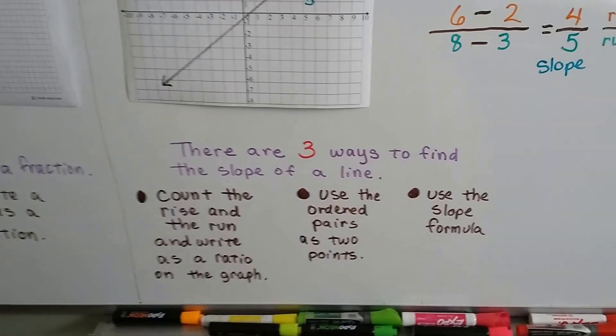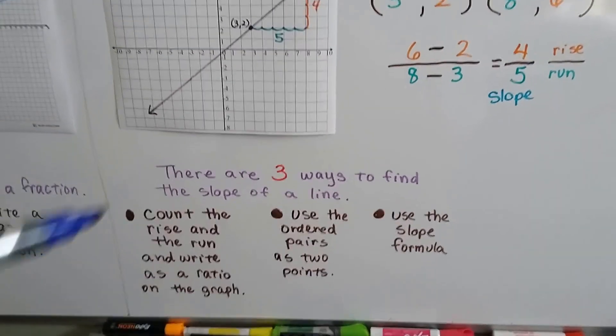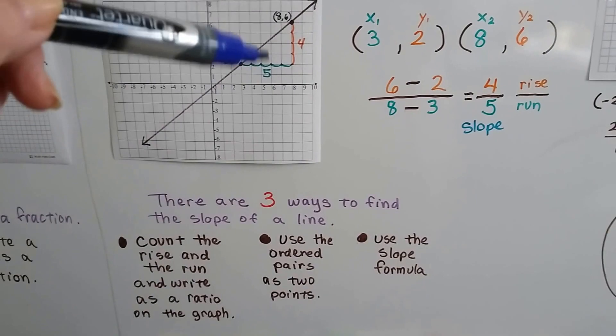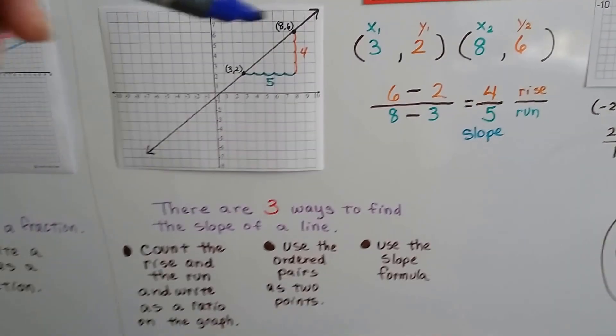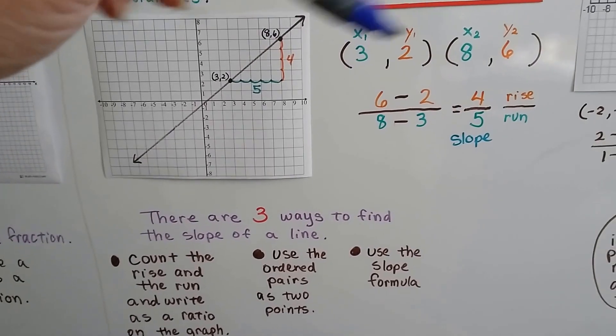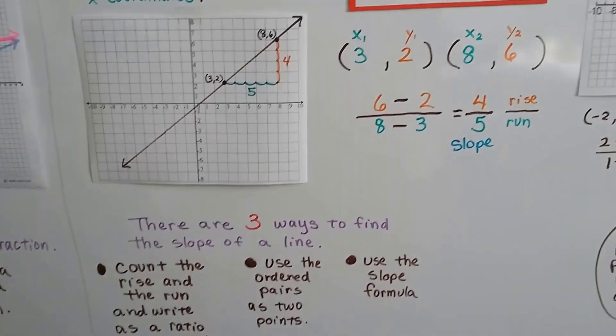So there's a few ways that we could find the slope of a line. We could count the rise over the run and write it as a ratio that we found on the graph. We could use the ordered pairs as two points. And we can use the slope formula to find it.